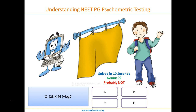Psychometric testing is a statistical tool. There is a lot of statistical analysis that goes into it — it's not just some psychology. Essentially, the idea is that the computer, based on the kind of response you give and the amount of time you take for each question, will decide what your knowledge level is.